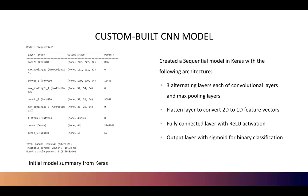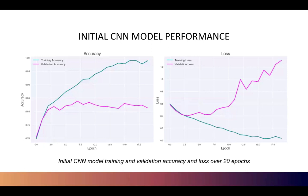Next, we custom-built the CNN model. We created a sequential model in Keras with the following architecture: three alternating layers of convolutional and max-pooling layers each; a flattening layer to convert 2D to 1D feature vectors; a fully connected layer with ReLU activation; and an output layer with a sigmoid function for binary classification. The plots show training and validation accuracy and loss over 20 epochs. Initially, both accuracies increase while loss decreases, indicating the model is learning. However, there is overfitting as training accuracy continues to increase while validation accuracy stagnates or decreases and validation loss increases.